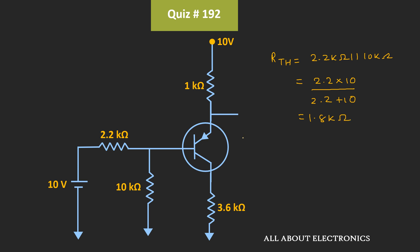Similarly, if we find the Thevenin's equivalent voltage, then Vth can be given as 10 kΩ divided by (10 kΩ + 2.2 kΩ) times 10 V, which is equal to 8.2 V.